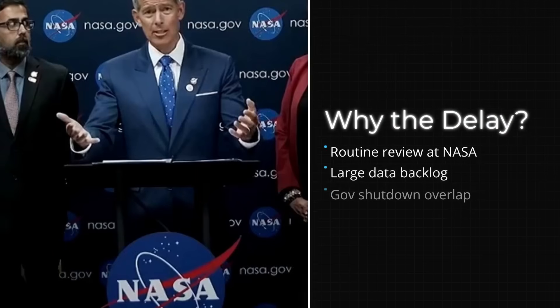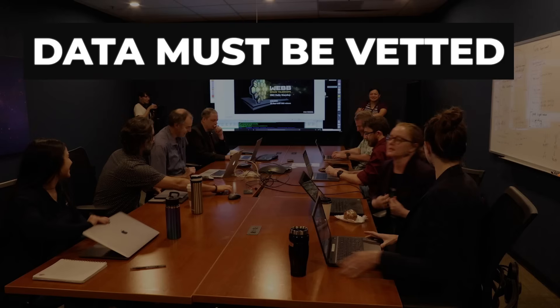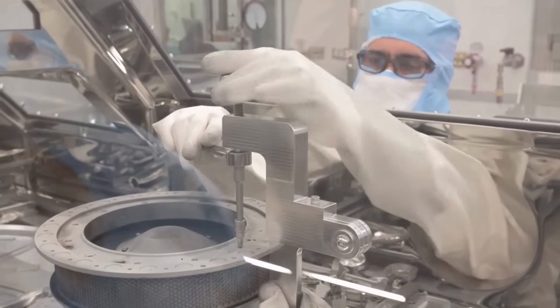NASA's Public Affairs Office cited routine review procedures, a data backlog, and the timing of a partial government shutdown as reasons for the delay. The official line was that all data must be vetted for planetary protection and mission integrity before release. That explanation satisfied few people.